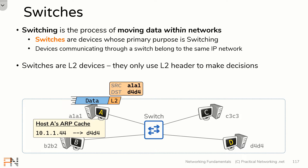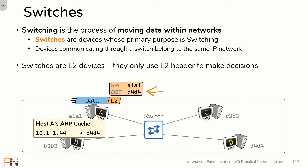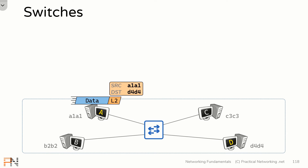We're going to show you everything that happens to get this data to host D through this switch. We are starting from the position that host A already knows the MAC address it's trying to speak to. Normally host A would have to discover this using ARP, but for our illustration we're going to assume host A already knows the MAC address it's trying to speak to, so we can leave ARP out of this illustration entirely. With that said, let's explain how switches facilitate communication within networks.